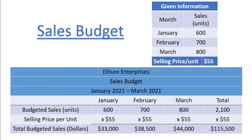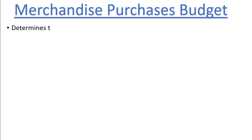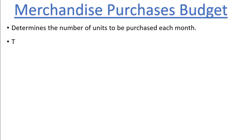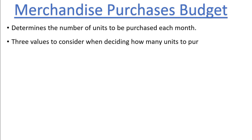Now we can move on to the merchandise purchases budget. The merchandise purchases budget helps us determine the number of units to be purchased in each month. Before we create our merchandise purchases budget, let's talk for a moment about how a company determines how many units it should purchase in any given period. In general, there are three relevant values that a company should consider when deciding how many units they should purchase in any given month.